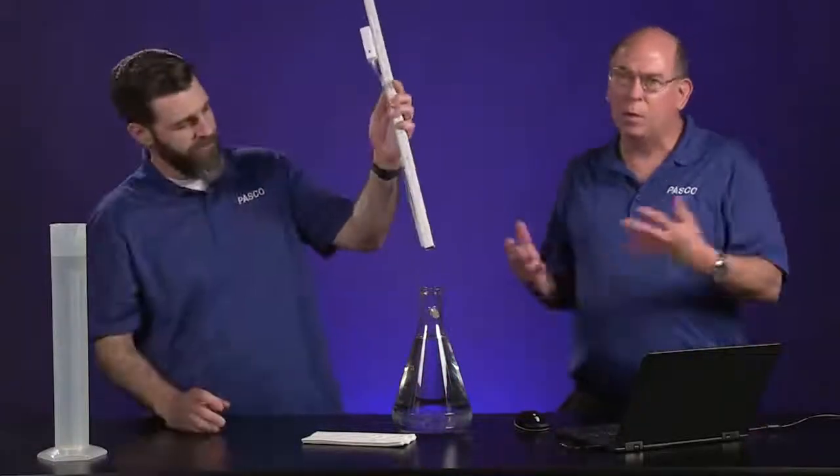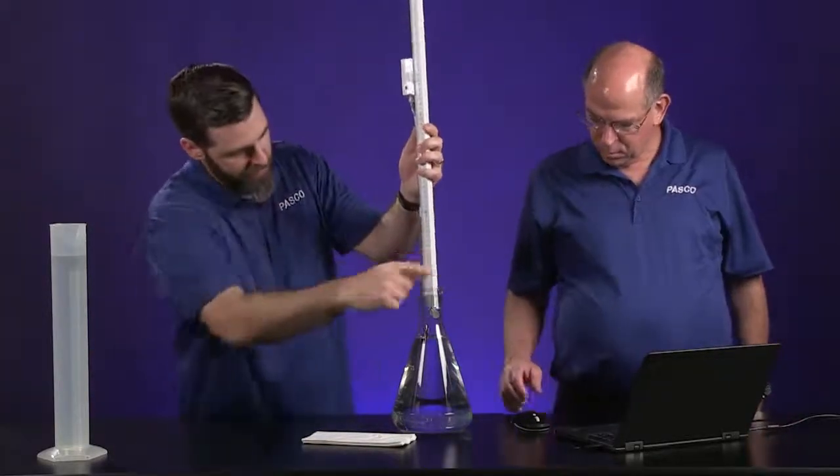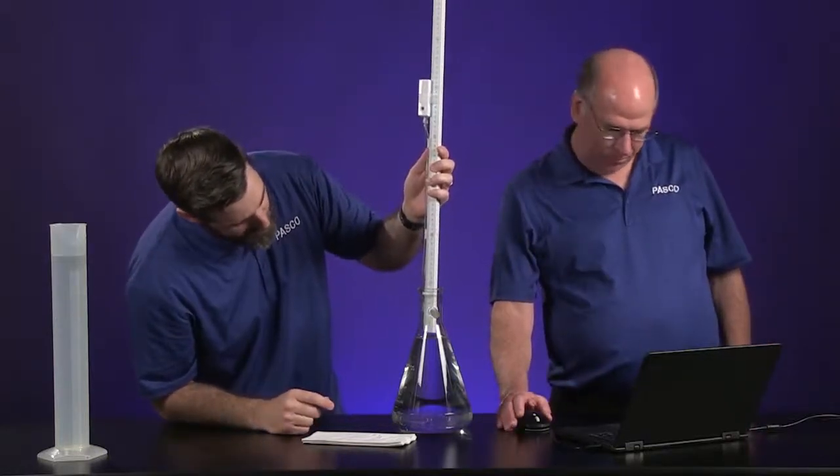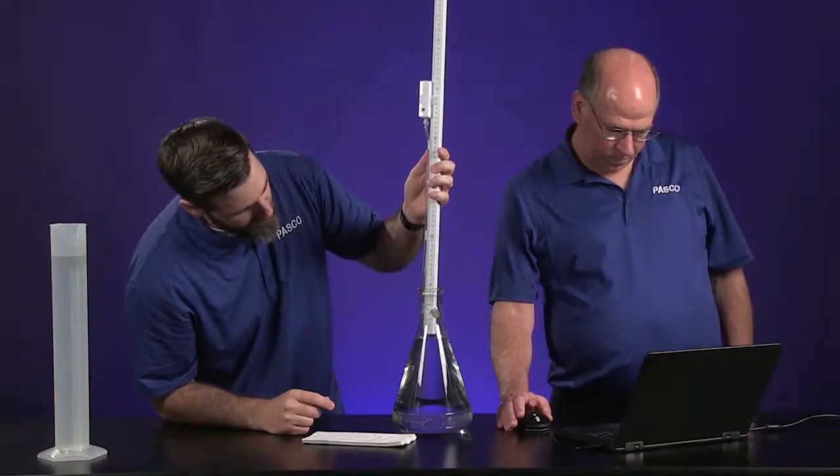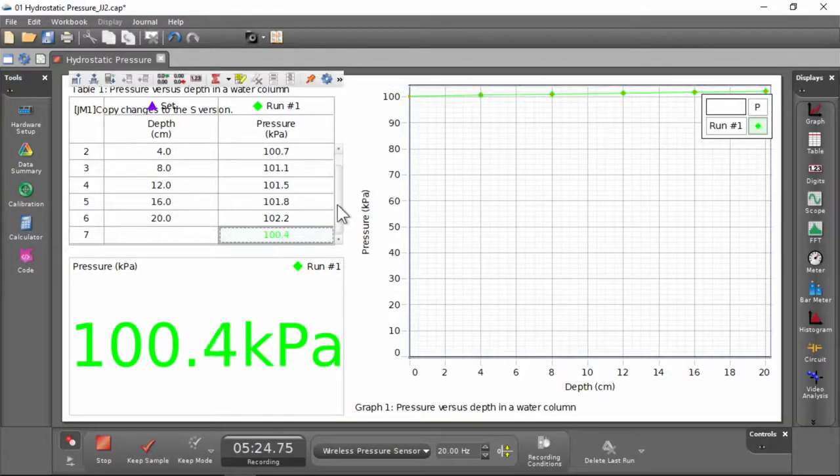Well, but until you measure it, you just don't know. Yeah. So let's do this. Let's go ahead. I'm going to drop it in there and let's watch the data value. We won't record it, but we'll watch it when we drop it in there. So atmospheric pressure looks about the same as it did with our tall water column. Yeah, 100.3.